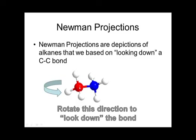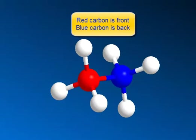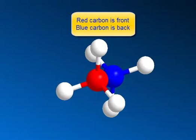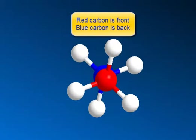Let's say we take these two carbons and look down this bond. If we rotate this around, we'll be able to look down the bond — looking at the molecule from the front. This is one carbon and the back carbon is the second carbon, and this is what we call a Newman projection.